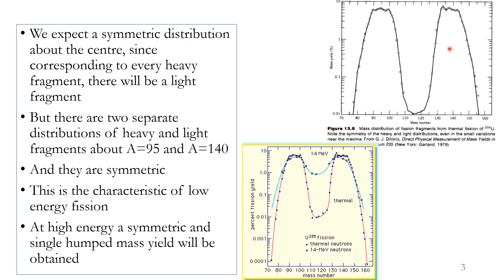This is the characteristic of low-energy fission. We expect a single symmetric bump centered about half the mass. At high energy, this changes — the thermal-induced fission curve shows the double bump, but with 14 MeV fast neutrons, this double bump diminishes into a single bump. With much higher energy, these two humps merge into a single symmetric hump as expected.